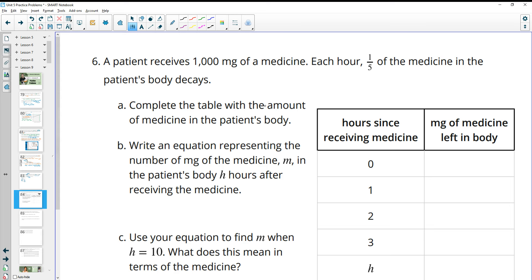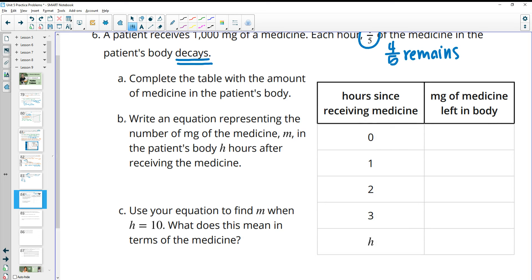Number six, a patient receives 1,000 milligrams of medication. Each hour, one-fifth of the medicine in the patient's body decays. And what this means is that if one-fifth is decaying, then four-fifths remains. And that's what we need for our equation or for what's left in the body is four-fifths, because one plus four is five. So if one-fifth is decaying, then four-fifths is remaining in the body. Complete the table with the amount of medicine in the patient's body. If we're at 1,000 to start, then we would multiply by four-fifths to get 800, multiply by four-fifths again, and then multiply by four-fifths again and you'll get all of these values. Timesing by the value that remains will get us that next one.